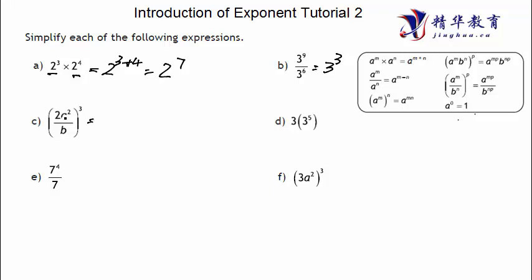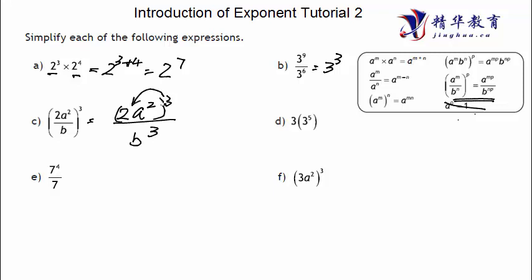So we have a rational here. On the top we have 2A squared, on the bottom we have A. We apply the rule: A to the power of M, B to the power of N, raised to the power P — the power P applies to both numerator and denominator. So we get two cubed times A squared cubed over B cubed. Two to the power of three is eight, and A squared to the power of three — power of power equals power multiply — gives A to the power of six over B to the power of three.